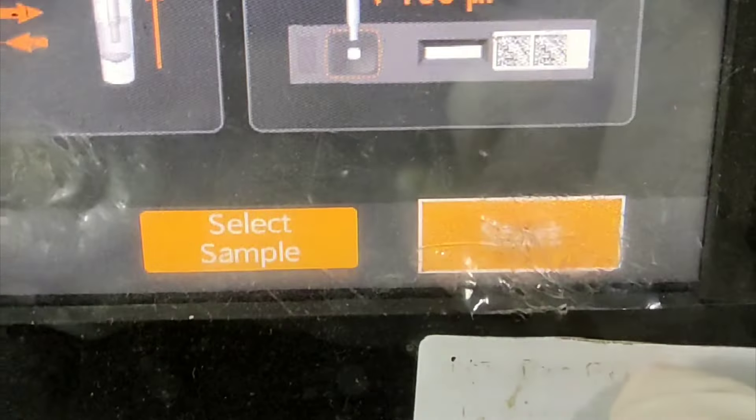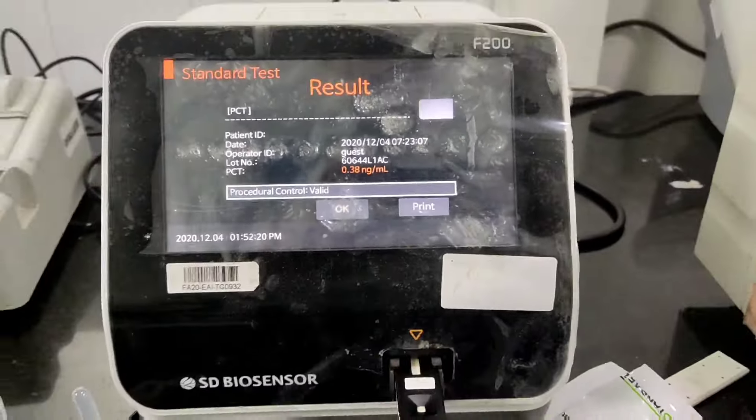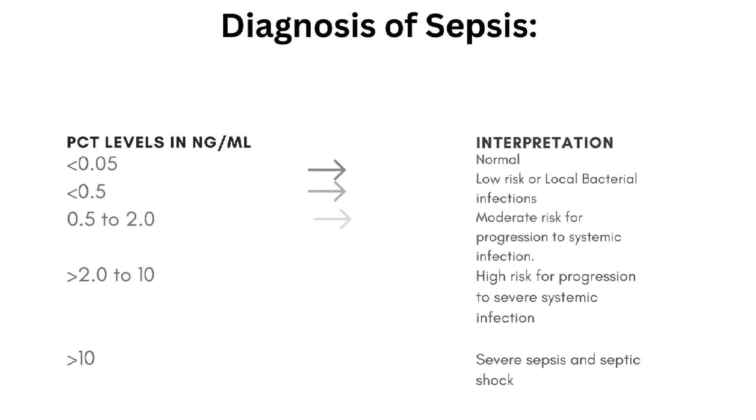As displayed by the procedure, we aspirate 100 microliters of sample and mix it with the procalcitonin buffer. Mix the sample and buffer two to three times with the disposable dropper. After adequate mixing, apply 100 microliters of the mixture to the sample pad and press the start button. Do not put bubbles in the sample well of the test device. It will take around 15 minutes to display the results.